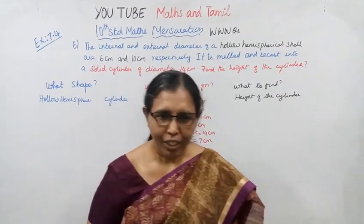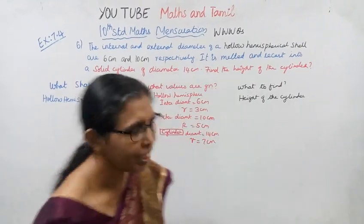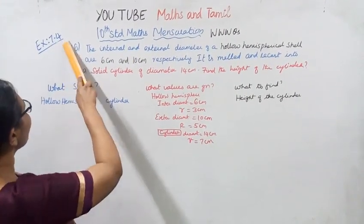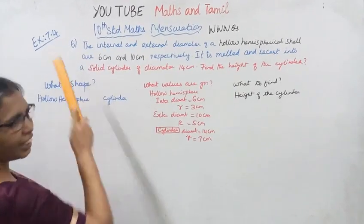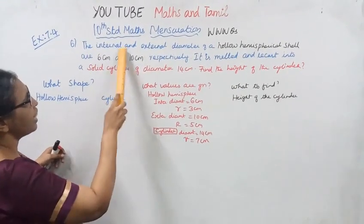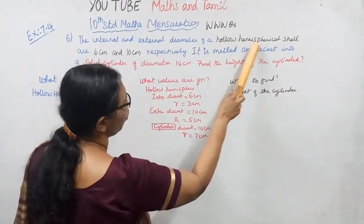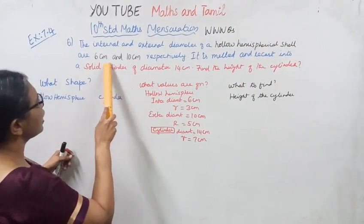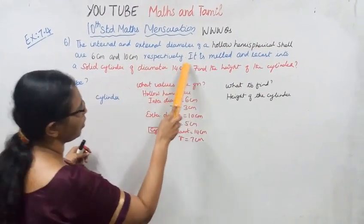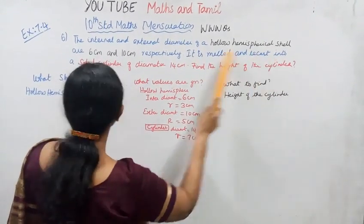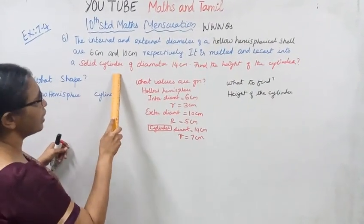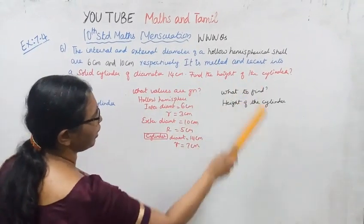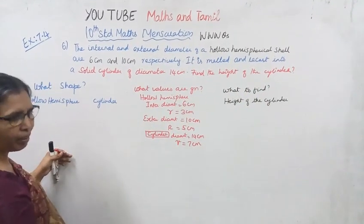Hello students, welcome to Max and Travel channel. 10th standard math, exercise 7.4, question 6. The internal and external diameter of a hollow spherical shell are 6 centimeter and 10 centimeter respectively. It is melted and recast into a solid cylinder of diameter 14 centimeter. Find the height of the cylinder.